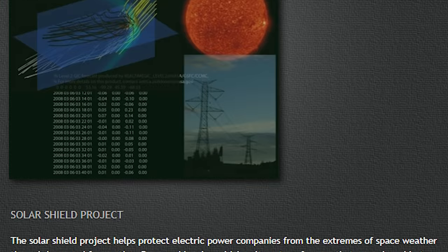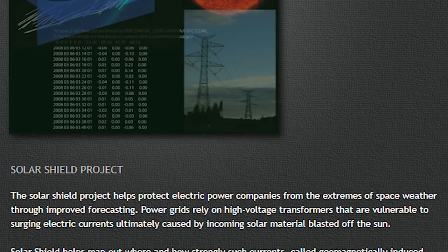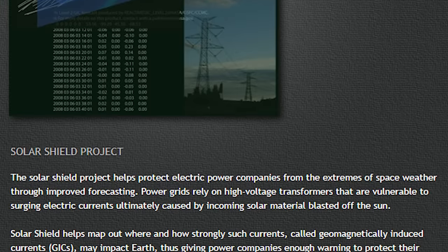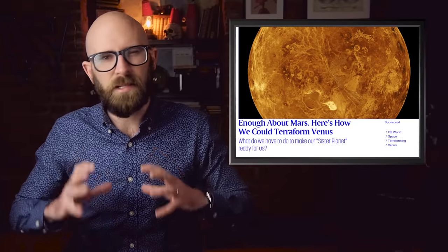Even if said reflectors weren't built on top of a hypothetical balloon city, the Venusian atmosphere is thick enough that they could be constructed to float on the surface of the clouds, needing little to no human maintenance.